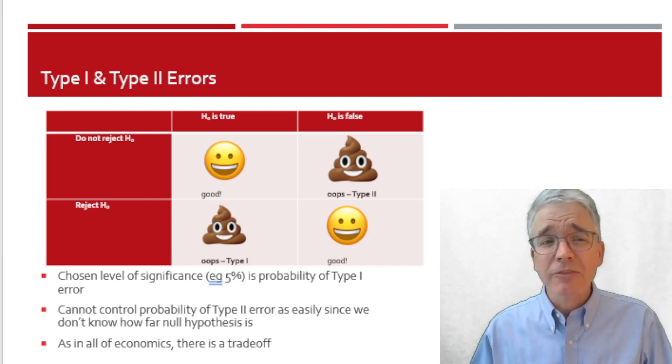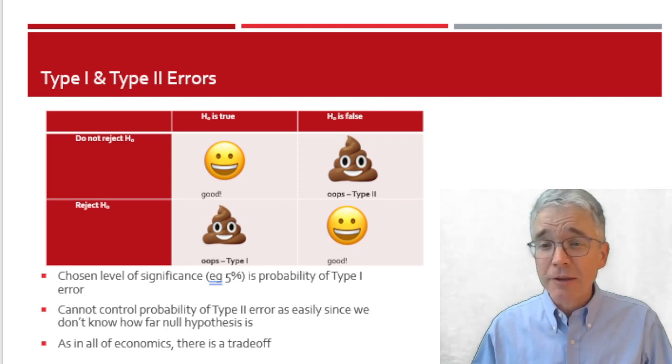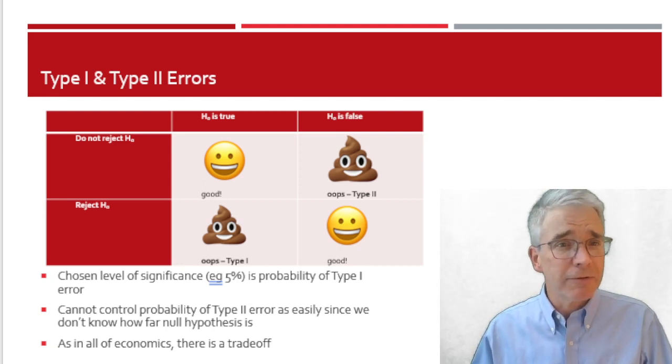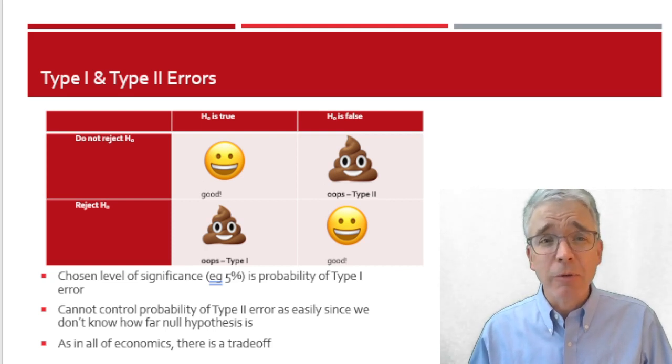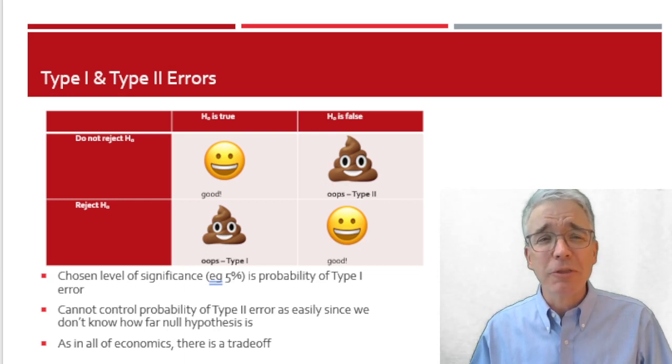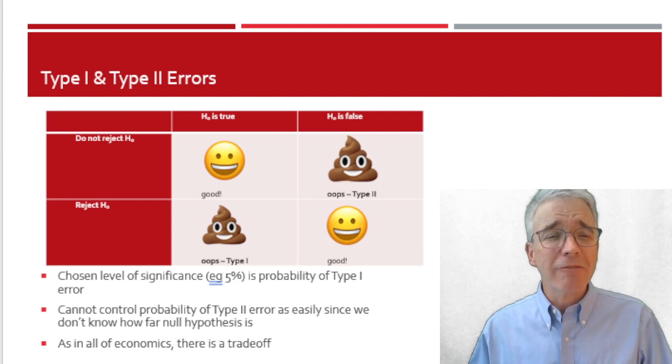Now, the other off-diagonal is type 2 error, where the null hypothesis is, in fact, false, but I do not reject it, even though I should have. Back to the dice example, that would be the case where maybe I've shaved off one side so it's slightly different probability rolling six, but maybe in only 20 rolls, I don't have good power. So I cannot reject the null hypothesis conclusively. I can't say for sure that it's not a fair dice.